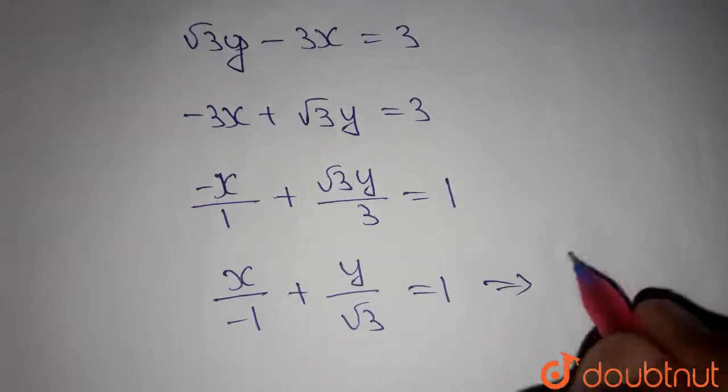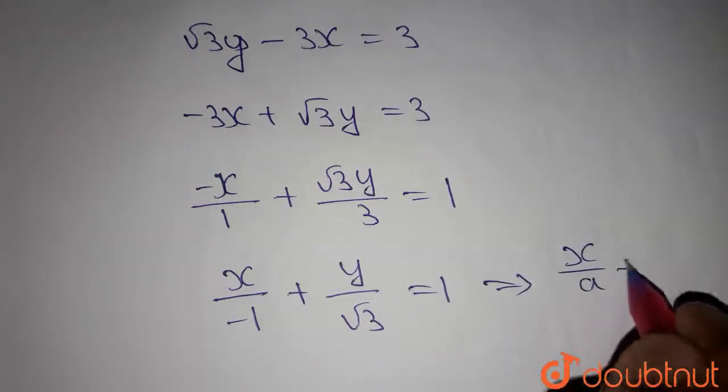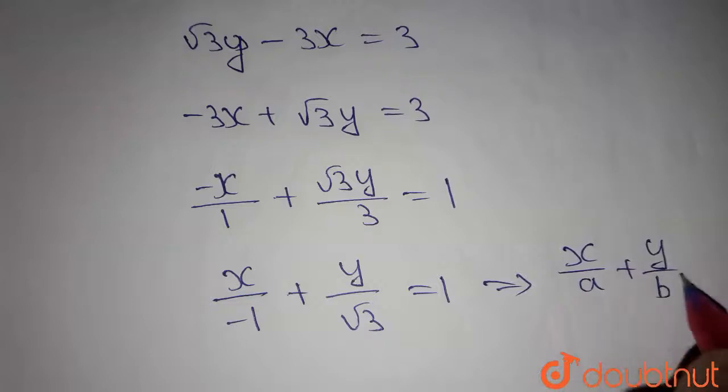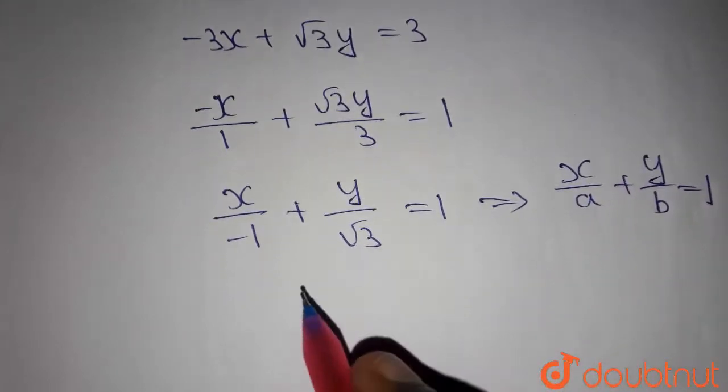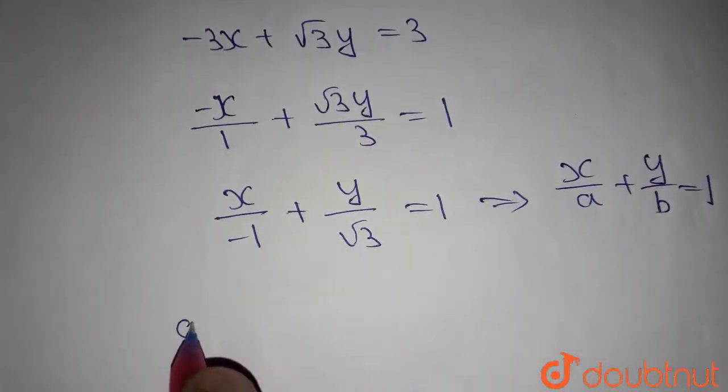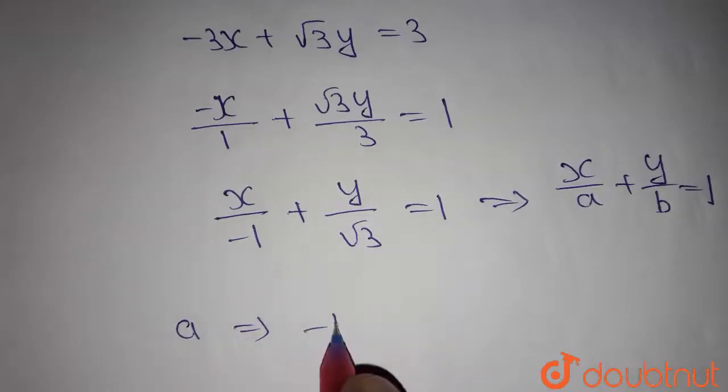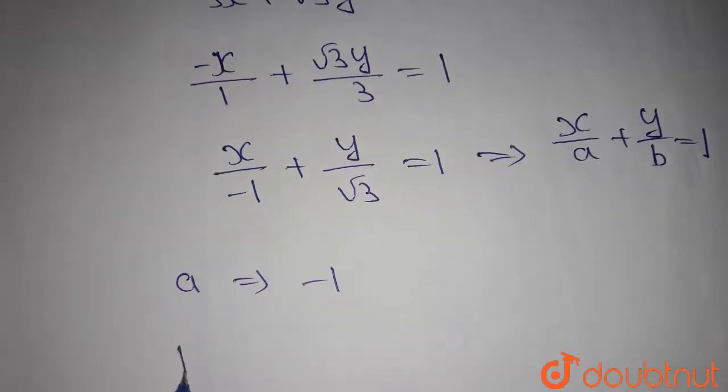Now compare this with the equation x by a plus y by b equals 1, where x intercept is a which is nothing but minus 1 and y intercept is b which is nothing but root 3.